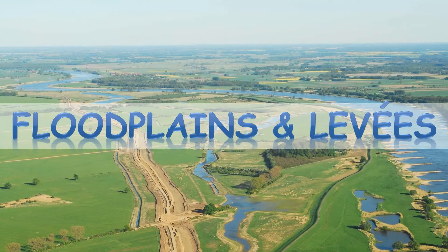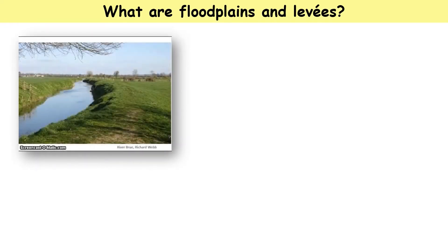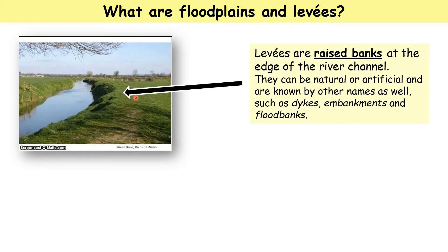This session is on floodplains and levees, with the idea of explaining what they are and how they form. Let's start with what they are. Here we can see a levee — it's this raised area of land next to the river. A good definition of levees is raised banks at the edge of the river channel. They can be natural, or they can be made by people, and they're known by other names such as embankments.